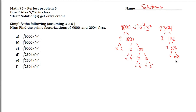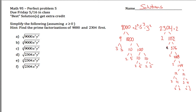288 times 2 is 576 — still even, so it's still 2 times something. In this case, 144. I recognize that one — that's 12 times 12. And 12 is 3 times 4, and each of those 4s are 2 times 2. So what we finally get is that 2304 is 2 to the 8th power times 3 squared.